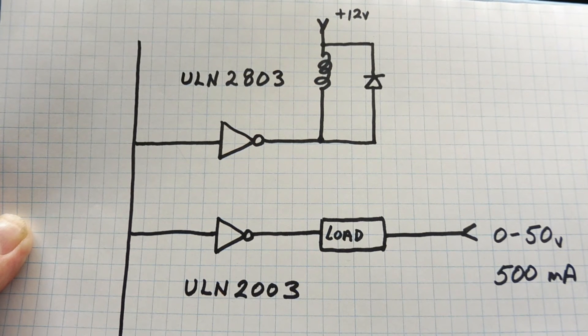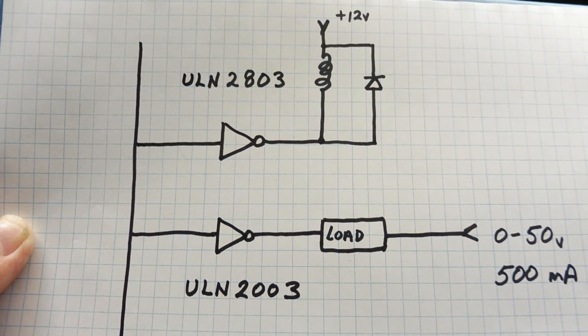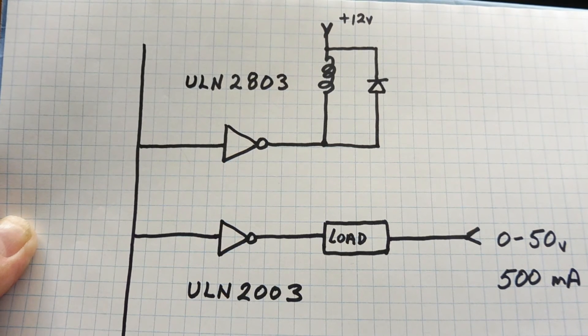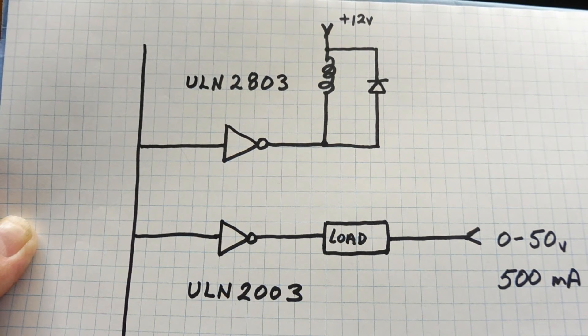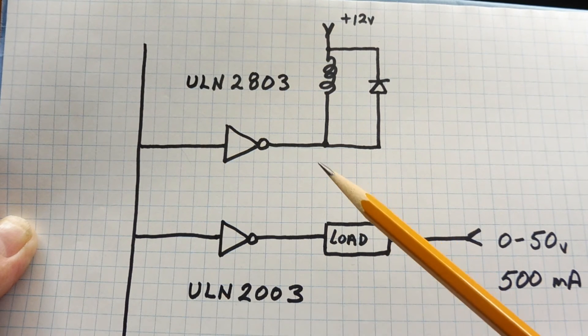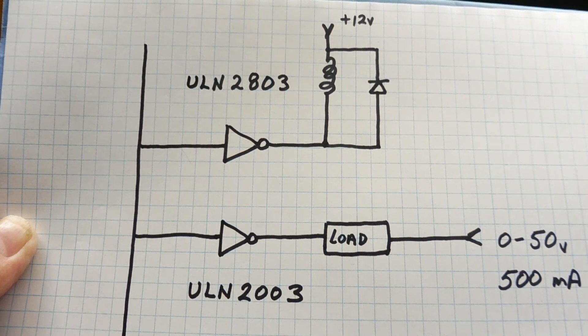These are open collector Darlington output drivers, and they can switch up to 50 volts at 500 milliamps. If you're driving an inductive load like a relay, they have built-in freewheeling diodes in the chip itself. These are logic level inputs, so 5 volt input will drive the output. These are the ULN2803 and ULN2003.